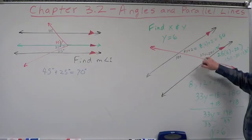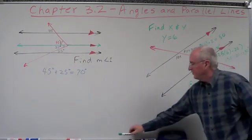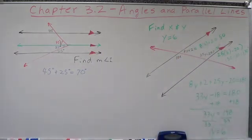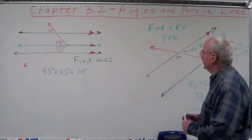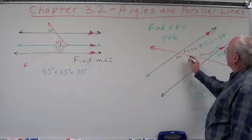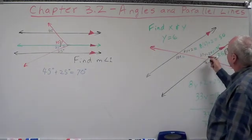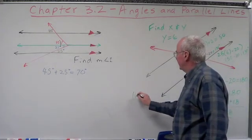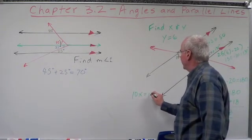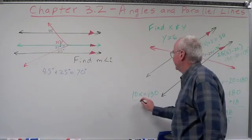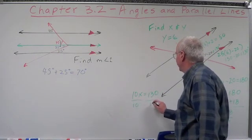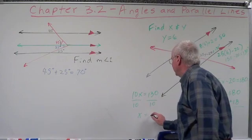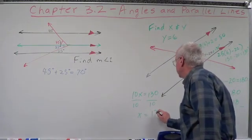This angle and the 130-degree angle — what relationship do they have? They're alternate interior angles of parallel lines, so they're congruent. Therefore this angle equals 130 as well. So we get 10X = 130, divide by 10, and X equals 13.